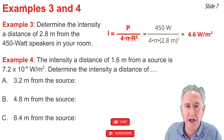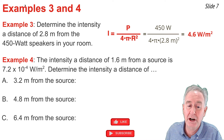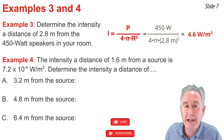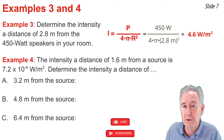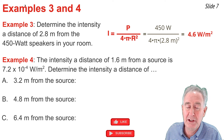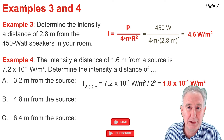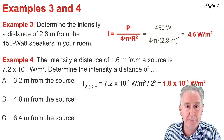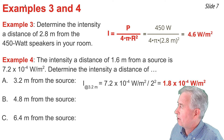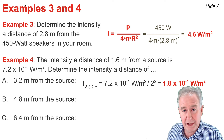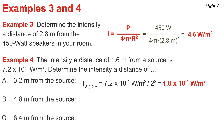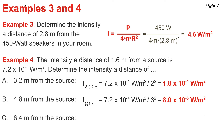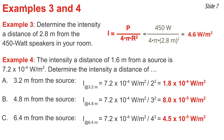Rather than plugging and chugging, I'll use the equation as a guide to thinking. Starting with 7.2×10⁻⁴ and applying the inverse square law: for Part A, since the distance is doubled, divide by 2² = 4. For Part B, since the distance was tripled, divide by 3² = 9. For Part C, since the distance was quadrupled from 1.6 to 6.4, divide by 4² = 16.